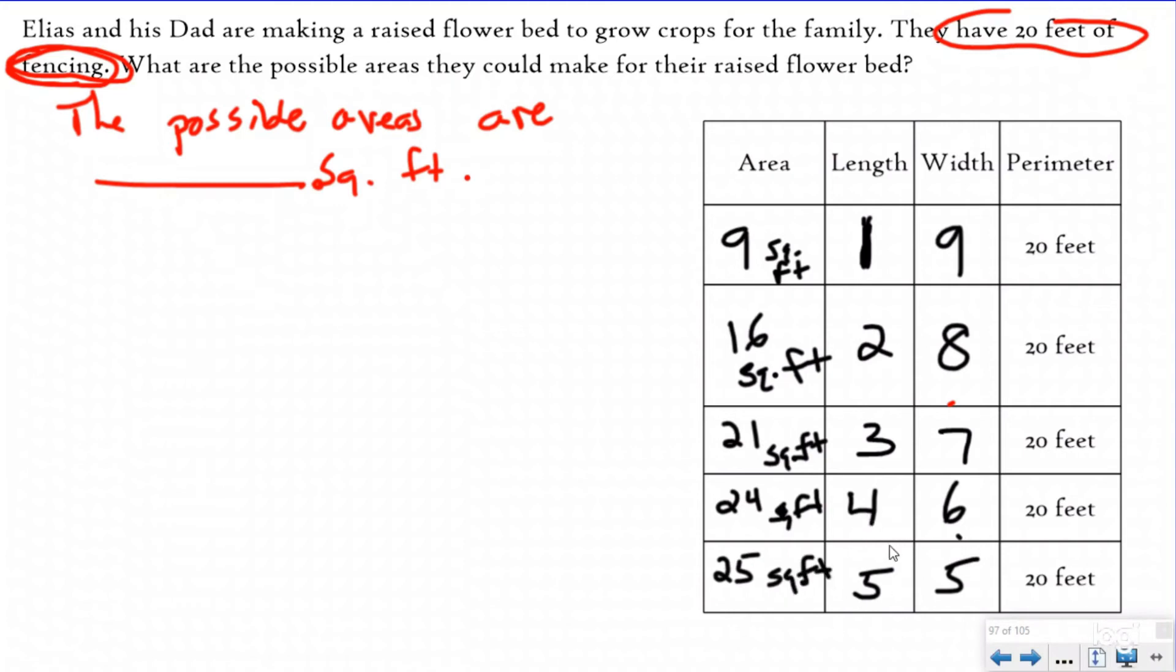Now, some of you are saying, why do you stop? Well, if I make the length six, what's the width have to be? Four. And then I'm back here to the same rectangle. So once I got to five and five, if I keep going, I'm just going to start going backwards down my chart and make these same rectangles again. There's no point in that.